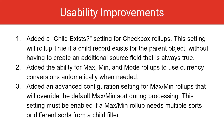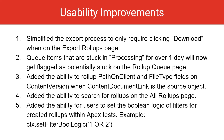The advanced max min configuration must be enabled if max min rollups need multiple sorts or different sorts from a child filter. We've simplified the export process so you only need to click download when on the export rollups page. Queue items stuck in processing for over one day will now get flagged as potentially stuck on the rollup queue page. You can roll up path on client and file type fields on content version when content document link is the source object. You can now search for rollups on the all rollups page, and we've added the ability to set the Boolean logic of filters for created rollups within Apex tests.